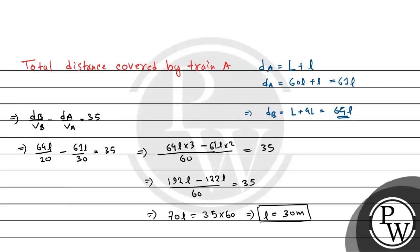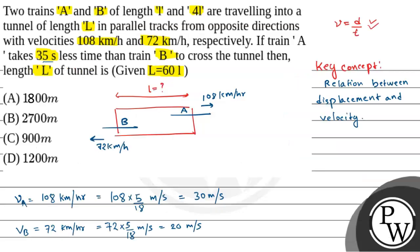Now what we need to find is the length of the tunnel. The length of the tunnel is capital L, which equals 60 times small L, that is 60 × 30, which equals 1800 metres. So the tunnel length will be 1800 metres. Option A — 1800 metres — is the correct answer. Hope you understand it.